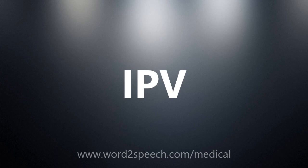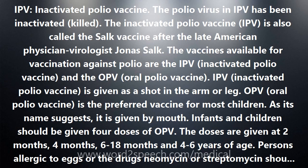IPV — inactivated polio vaccine. The polio virus in IPV has been inactivated, killed. The inactivated polio vaccine IPV is also called the Salk vaccine, after the late American physician and virologist Jonas Salk.